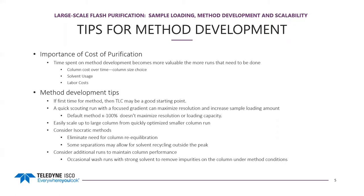If it's a first-time method, TLC can be a really good starting point to determine what range your compound is eluting in the gradient. You can also do a quick scouting run with a focused gradient to maximize the resolution and then increase your sample loading amount. When we run a default method from 0 to 100% in normal phase or 5 to 100% in reverse phase, that doesn't maximize the resolution or loading capacity. The compound is really only actively being separated during about 15 to 20% of the gradient — everything outside that range, it's either sitting at the top or already collected.